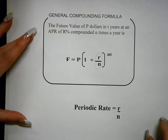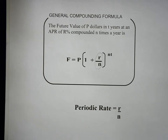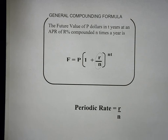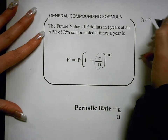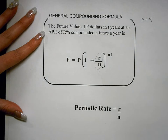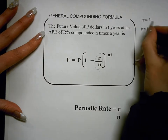The general compounding formula covers all of the interest that is compounded a particular number of times in a year. So if we're talking about something compounded quarterly, that's four times in a year, so N would equal 4. If we're talking about something compounded monthly, that's 12 times a year because there are 12 months in a year, so N would equal 12.